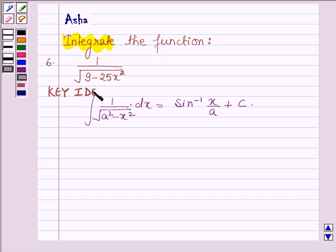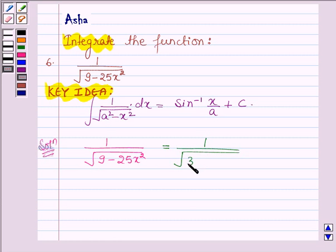This is our key idea. Now, let us start with the solution. The given function is 1 upon root over 9 minus 25x square. This can further be written as 1 upon root over 3 square minus 5x whole square.